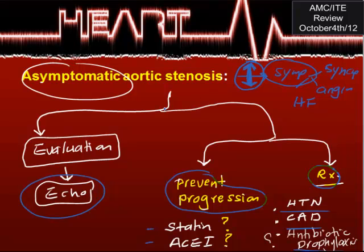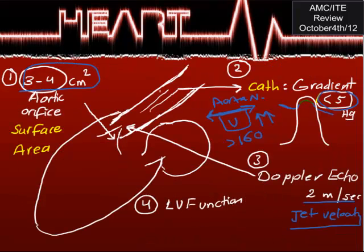We can evaluate by echo, and the frequency of echo will be discussed in a few minutes. We also need to prevent progression. There have been big studies about statins and ACE inhibitors and whether they have any role in asymptomatic aortic stenosis. Finally, we'll talk about comorbidities like hypertension and coronary disease, and antibiotic prophylaxis. This is the introduction for aortic stenosis.